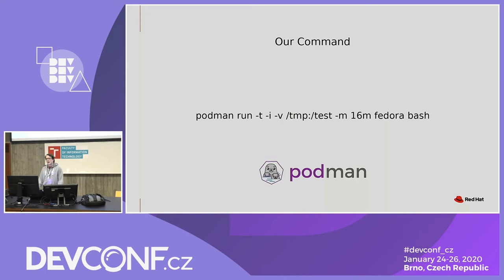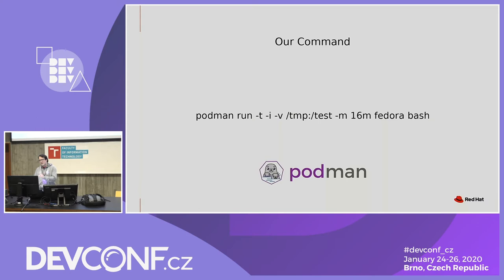Let's start talking about Podman. This is a pretty simple sample Podman command. You can see we have a volume, we've got a memory limit, we're going to launch a Fedora image, and we're going to run bash. Scott McCarty asked me: what happens when you press enter on a command like this? We're going to answer that today. We're going to trace this command in two different ways — as root, and also without root, because those two end up being pretty different.